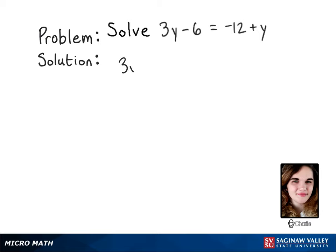Alright, 3y minus 6 equals negative 12 plus y. So what happens when you have the same variable on both sides of the equals sign?